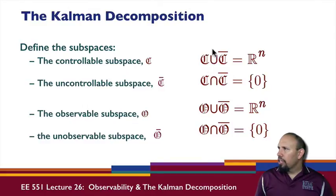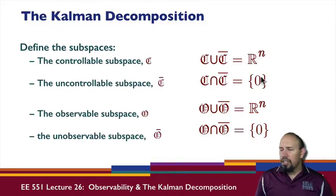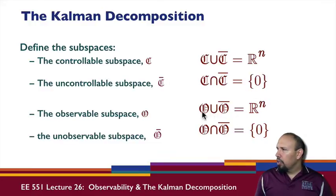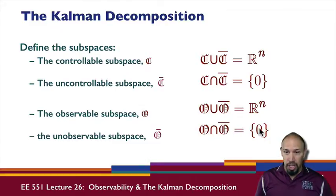These two subspaces — the controllable and uncontrollable — have a union that is all of R^n, and their intersection is only the zero element. Similarly, the union of the observable and unobservable subspaces is all of R^n, and the intersection is only the zero element.